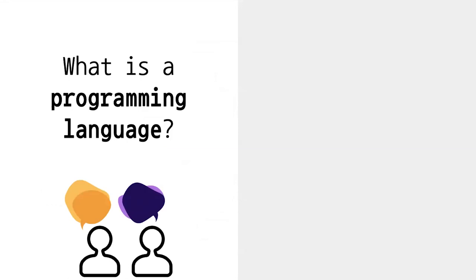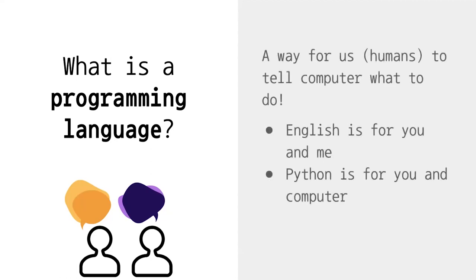So first of all, what is a programming language? A language is for two parties to communicate with each other. A language like English is for people to talk to people — Python is for you to talk to the computer. Just like any other language, it has its own culture or philosophies, its own grammar, and its own limitations and advantages.